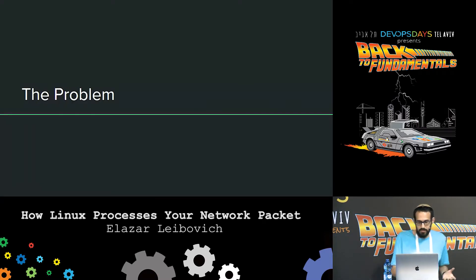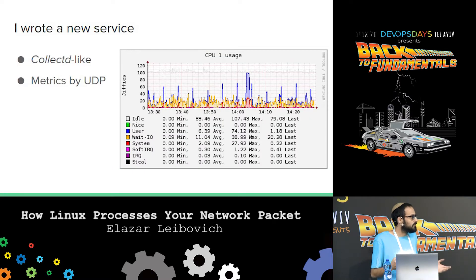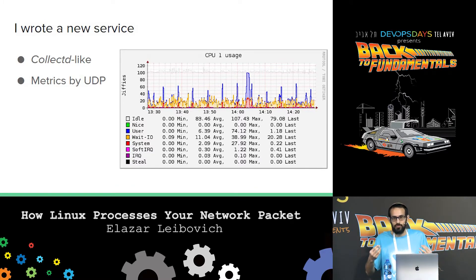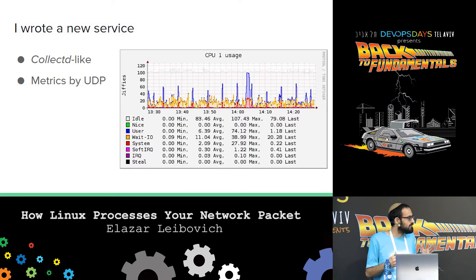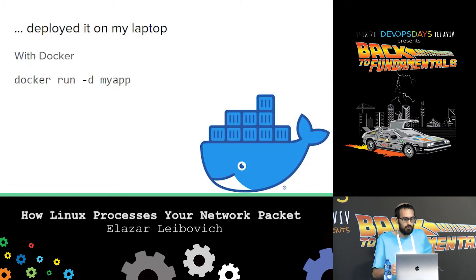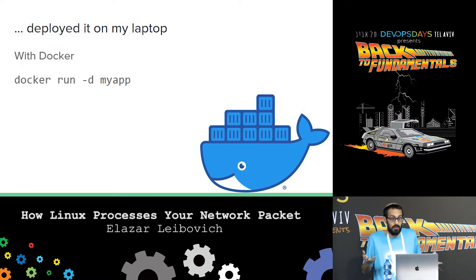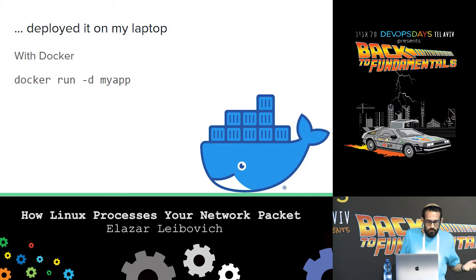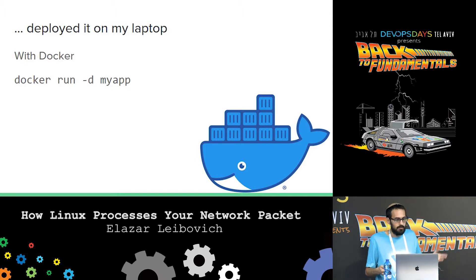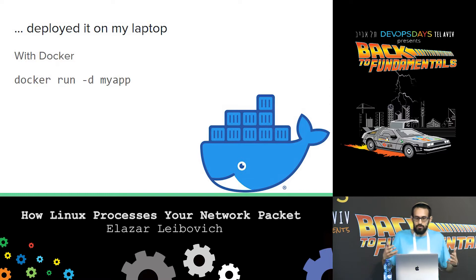What's the problem I ran into? Let's say you wrote an application, something like CollectD — an application that receives metrics via UDP and builds beautiful graphs from those metrics. You developed it, it works, everything is good. Now you deploy it, you run it in a production-like environment with Docker. You would probably run it with a command line like this one and it would work. You would send metrics and data from your laptop to the container, and the container would receive them.